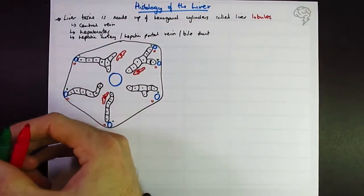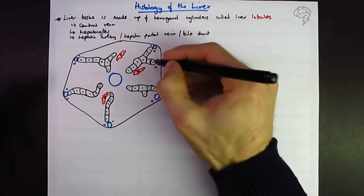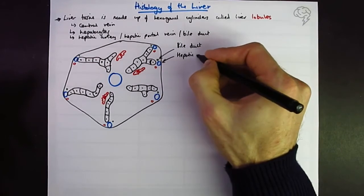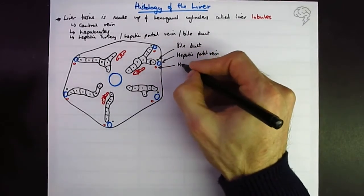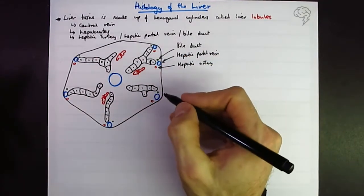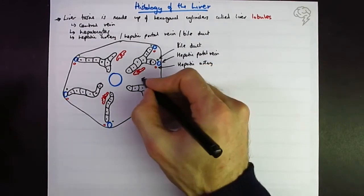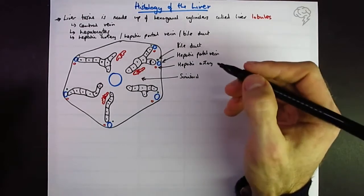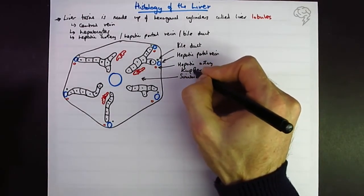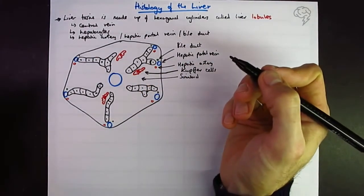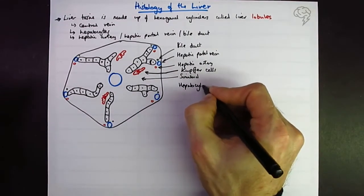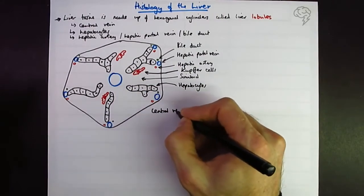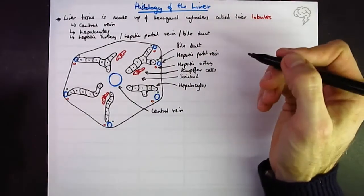Let's annotate this. We've got our trio here, sometimes called triads because there's three things: the bile duct, the hepatic portal vein, and the hepatic artery. The gap between these is called the sinusoid. Within the sinusoid we have these funny looking cells called Kupffer cells. These cells are the hepatocytes, the cells you can actually see. This is the central vein, and this whole thing is the hepatic or liver lobule.